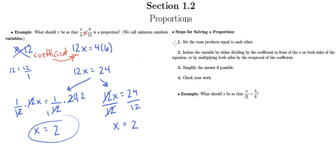So let's take a look at the general steps for solving a proportion in general. So number one, set the cross products equal to each other. So that was this part right here. Number two says isolate the variable by either dividing by the coefficient in front of the x. That's what we did in the second way. Or by multiplying both sides of the equation by the reciprocal of the coefficient. So that's where we multiply by 1 over 12. Remember, reciprocal means the flip. So if you need a little reminder there, that means flip.